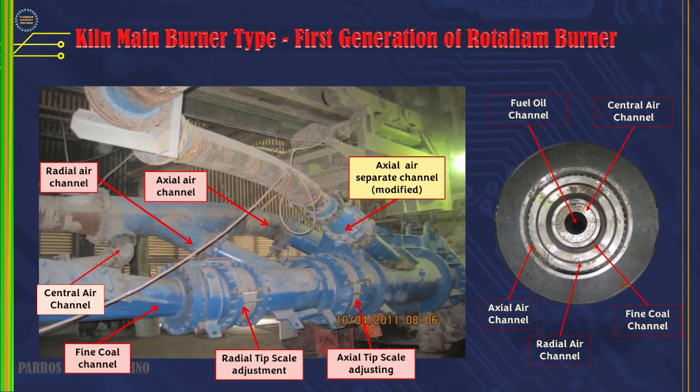This is a picture of the first generation Rotoflame burner. It has axial air, radial air, and central air channels, a coal fuel line, and a scale to change the position of the burner nozzle. Each air line from the primary fan is equipped with a valve to open and close, except for the coal fuel line which has no valve installed. The maximum primary air pressure for the primary fan is around 220 millibar, and modifications can be made by adding a roots blower to drain the axial air separately.